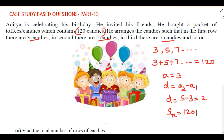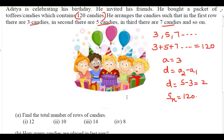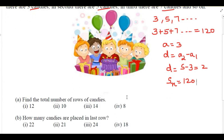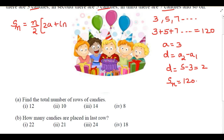Now we will find out the answer to the first question: find the total number of rows of candies, meaning we have to find n. We write the formula: Sₙ = n/2 × (2a + (n-1) × d).